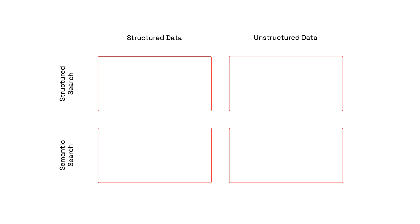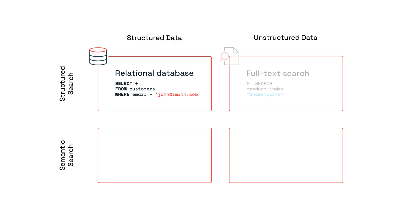First, we have structured data with structured queries — match and filter data with a schema using exact queries. The most common example is the humble relational database and the SQL query, but there are plenty of other ways to store and query structured data. Next, unstructured data with structured queries — find matches in data that doesn't have a schema, like natural language, using exact or almost exact queries. The best example is full-text search, with or without stemming and fuzzy matching. There are also image analysis techniques that can compare things like color, brightness, or symmetry.